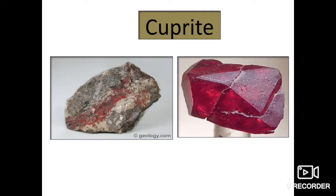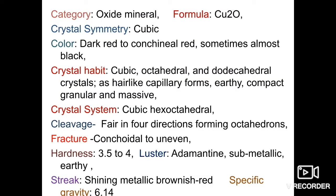The next mineral is cuprite, which is an oxide mineral. The formula is Cu2O — cuprous oxide. The chemical name is cuprous oxide. The crystal system is cubic. Color is dark red to cochineal red.